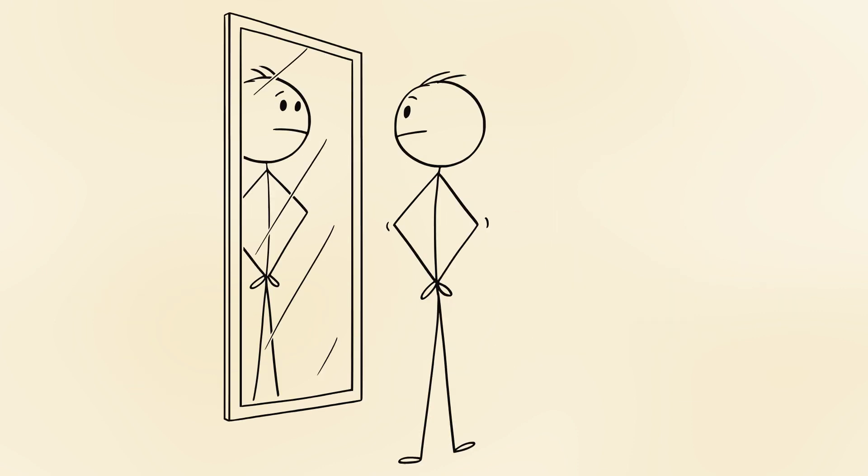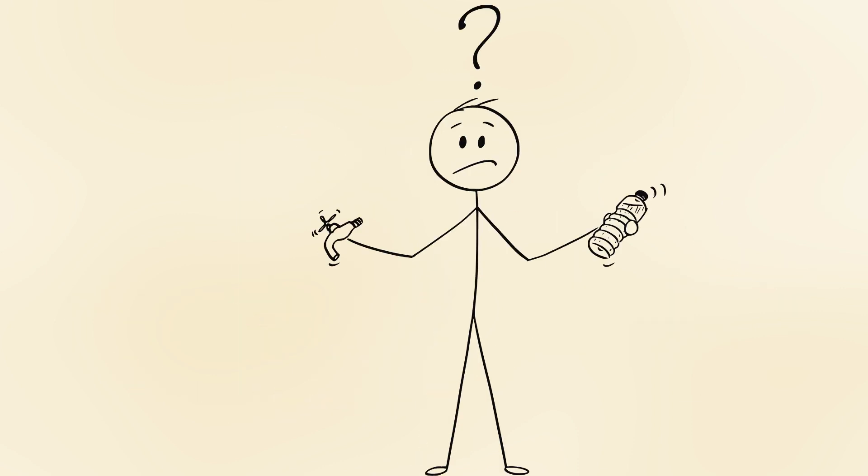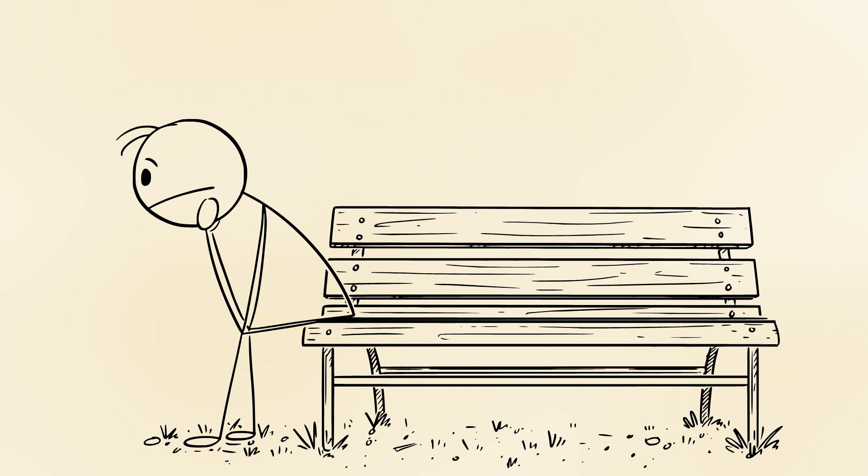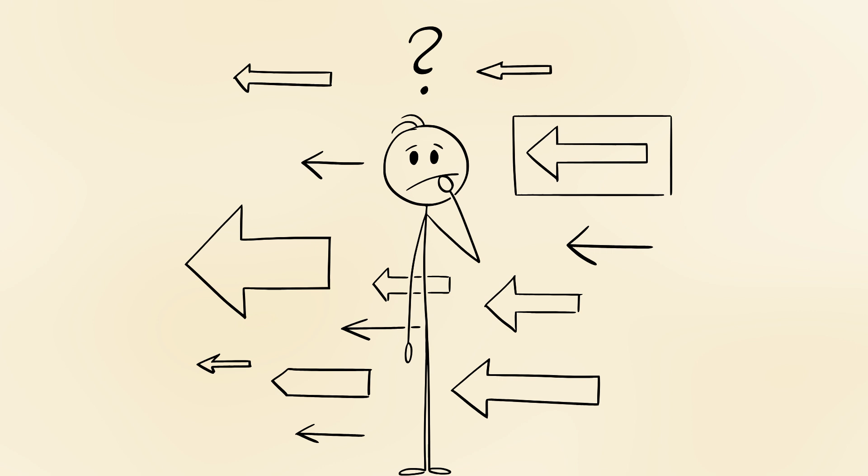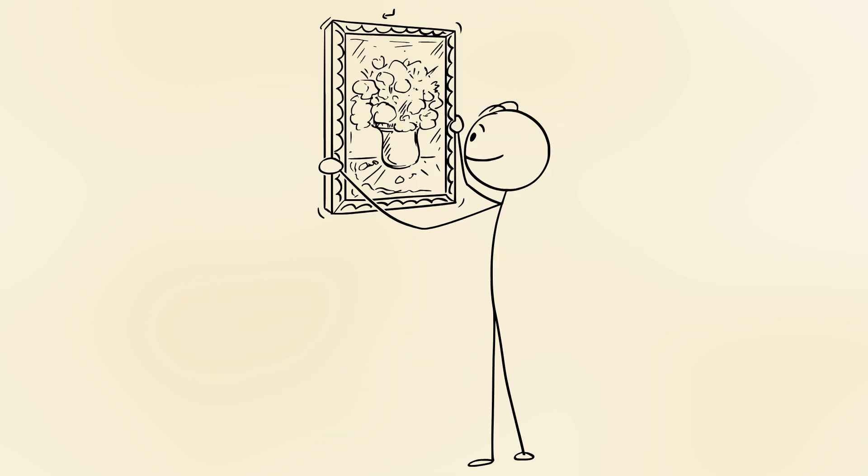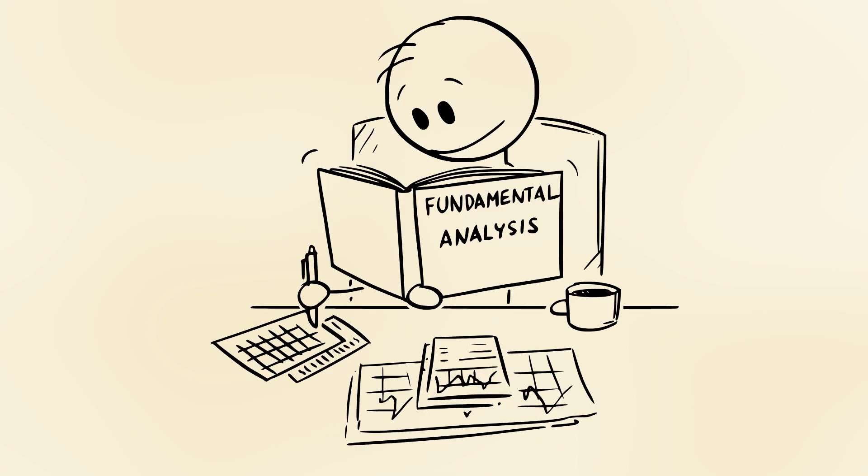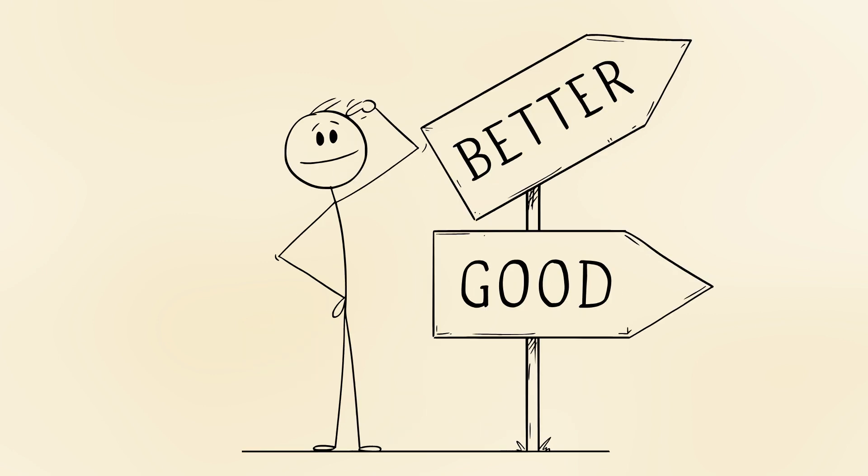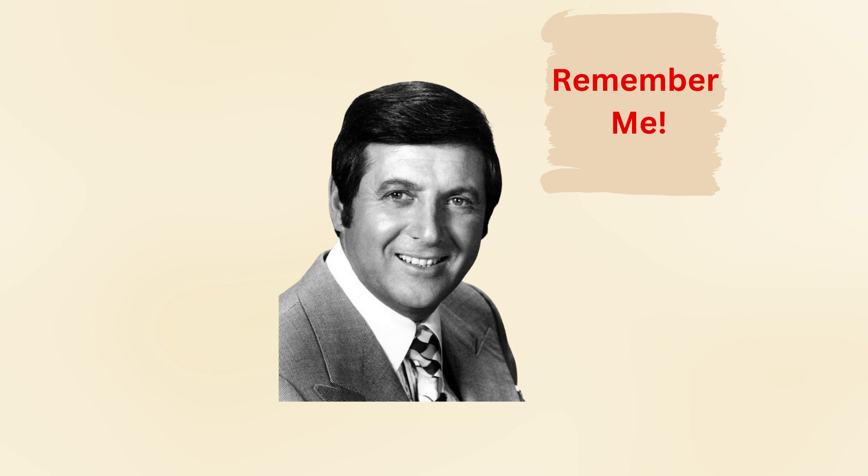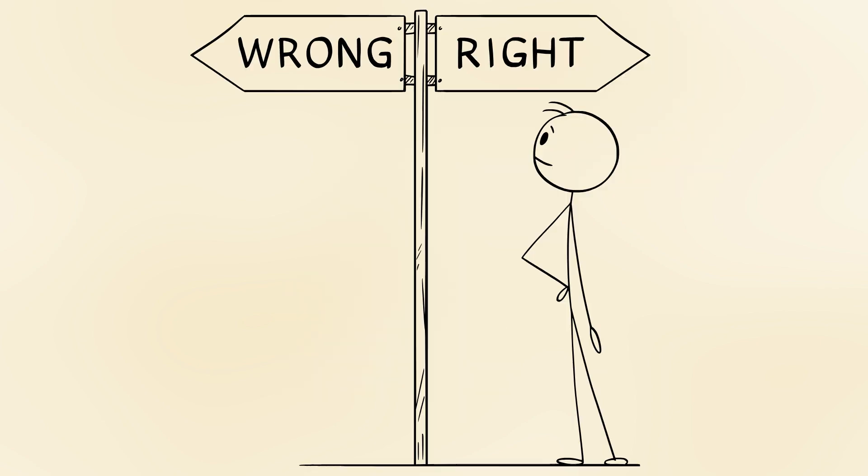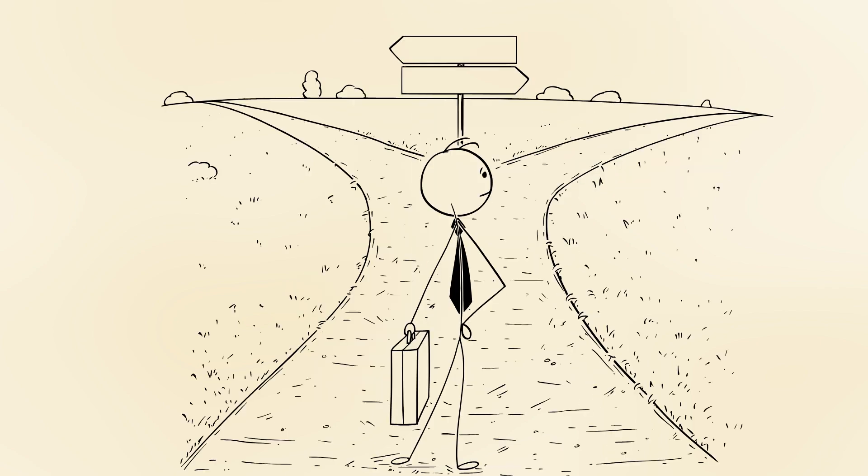Now, ask yourself, when was the last time you made a decision based solely on your gut feeling? What if, like the Monty Hall problem, the best choice isn't the obvious one, but the one that comes from understanding the full picture? Sometimes, stepping back and rethinking the situation can reveal a better path forward. The next time you find yourself faced with a tough decision, remember the Monty Hall problem. Instead of sticking with your first instinct, consider whether switching might just give you the winning edge. It's a small shift in perspective that can lead to big rewards.